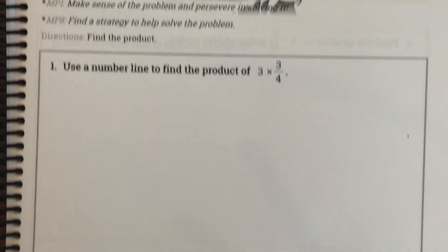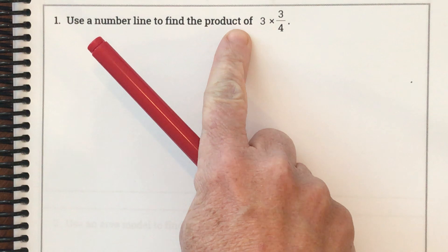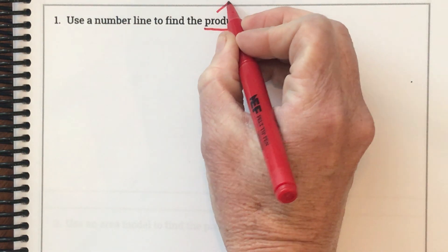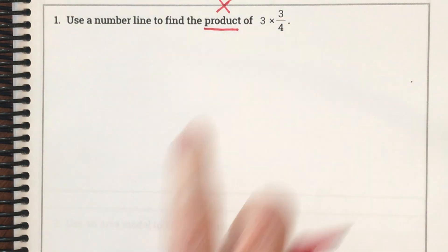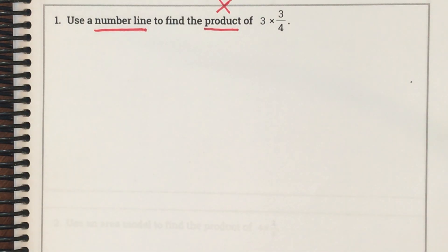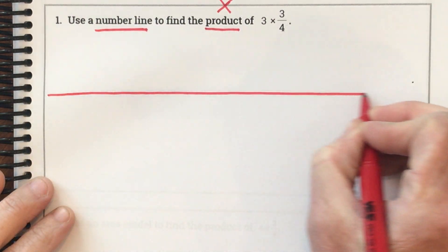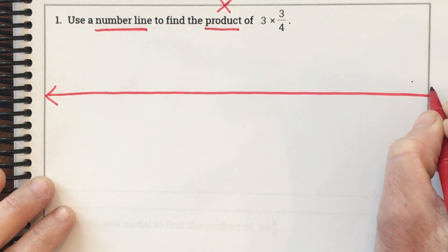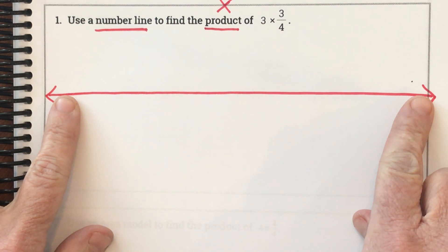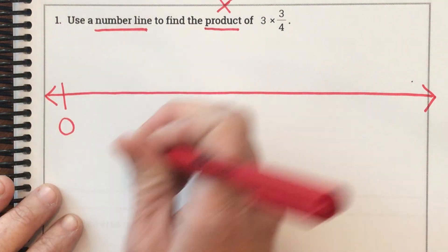Here's my first problem: use a number line to find the product of three times three-fourths. Product is our clue word for multiplication, but they also gave us the multiplication symbol. They want us to use a number line. I'm going to start with my number line. What you'll notice is I don't know how long my number line is going to be, so it's not going to be just zero to one — I'm going to make it longer.